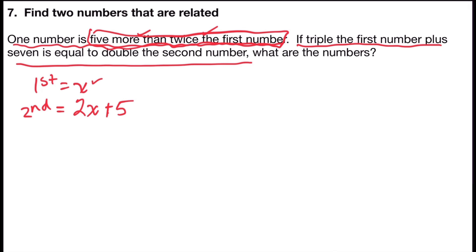Just like I did in the first few problems, I'm going to find my word is. There's my equal sign. So the left side will be triple the first number plus seven. So the first number is x. Triple x will be three times x plus the seven.